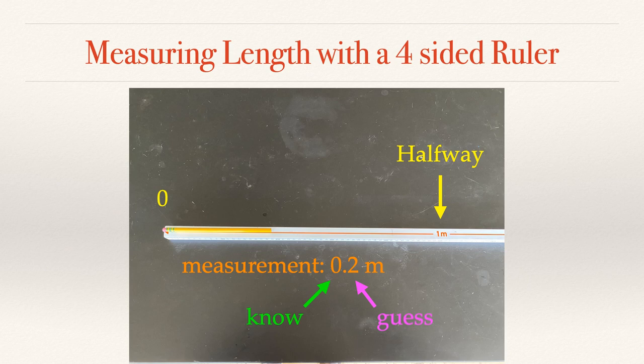However, one of your classmates might measure this as 0.3, for instance. If you said 0.1 or 0.4 or 0.5, I might question that. But I think that's a pretty good guess. So in a measurement, we always, there are numbers that we know and then we estimate to one place beyond what we know.